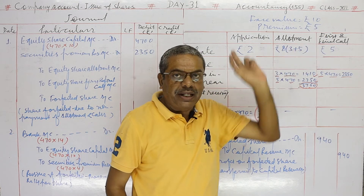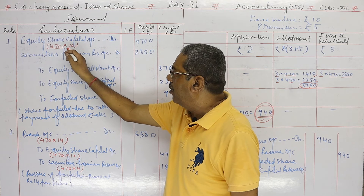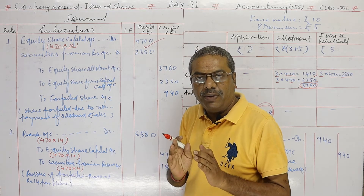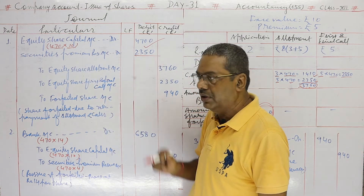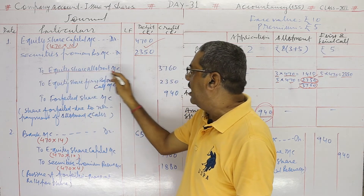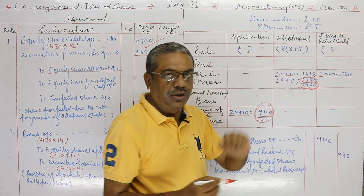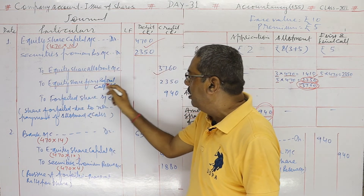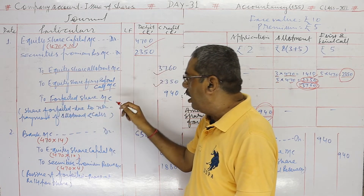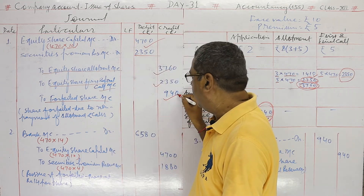Paid up is 10 out of 10. Number of shares is 470 and paid up amount is rupees 10 per share, so it will be 4700. Since the company did not receive the premium amount, we show 2350 here as the security premium. Allotment amount not paid is 3760. Similarly, first and final call not paid is 2350. The forfeited amount is 940. This is the journal entry for forfeiture of shares.